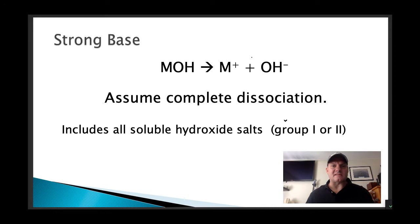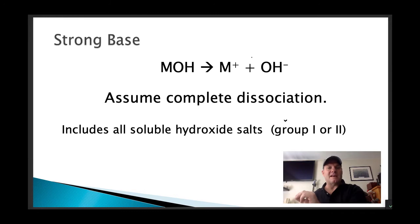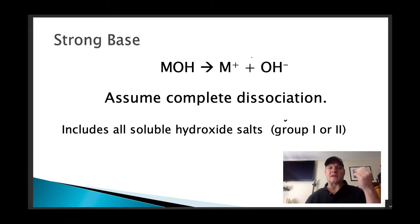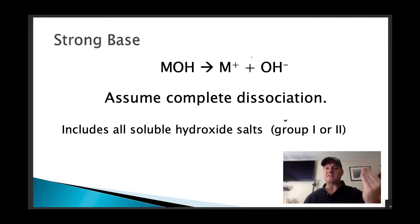What about strong bases? Bases are hydroxide salts — they produce hydroxides when dissolved. Any soluble metal hydroxide is going to be a strong base. Usually we're talking about group 1 or group 2 hydroxides: sodium hydroxide, lithium hydroxide, potassium hydroxide, and calcium hydroxide or magnesium hydroxide. Those metals bonded to a hydroxide form a strong base.